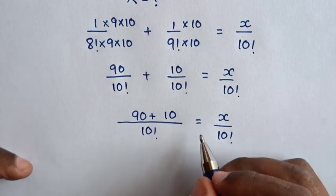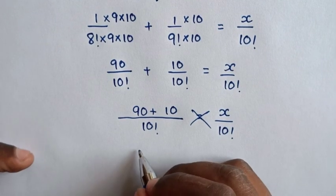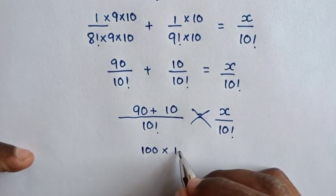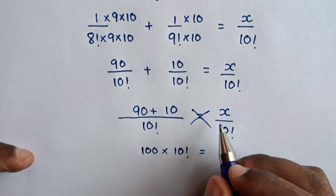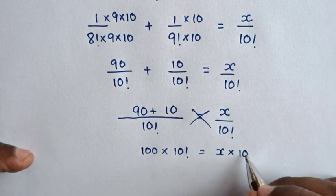Then in the next step we cross multiply. So the sum, 100 times 10 factorial, is equal to x times 10 factorial.